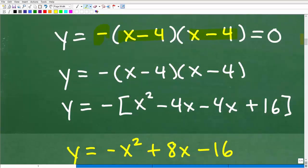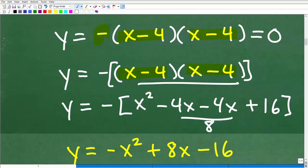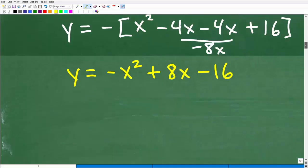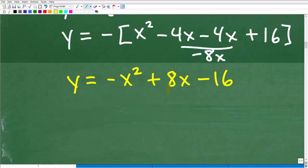What I could do here is expand this. I could take these two linear factors, multiply them together. This would be x squared minus 4x minus 4x, which is minus 8x plus 16. Then take that negative sign and multiply in. You would end up with negative x squared plus 8x minus 16. If you were to graph this, you would have that upside-down parabola that bounces at 4.